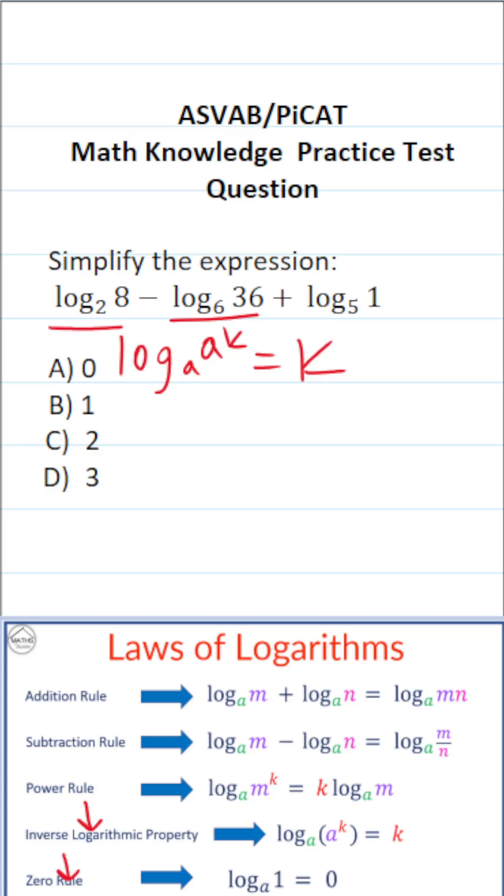And let's start with this. We want to rewrite this 8 such that it is a 2. And how am I going to do that? Well, 8 is the same thing as 2 times 2 times 2. 2 times 2 times 2 is 2 to the third power. So let's go ahead and rewrite this one. This becomes log base 2. Again, we're going to rewrite 8 as 2 to the third power.